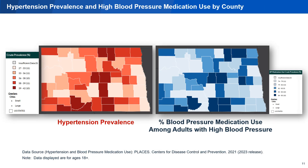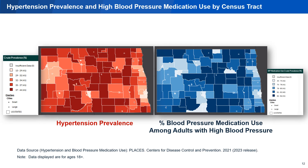Because medication is one very important way to address hypertension, it is helpful to observe how the patterns of high blood pressure medication use line up with the prevalence of hypertension. Comparing these maps, we see that many of the counties with the highest prevalence of hypertension also have high proportions of high blood pressure medication use. We can break these data down by census tract too, to look at hypertension prevalence and medication use at a more granular level.